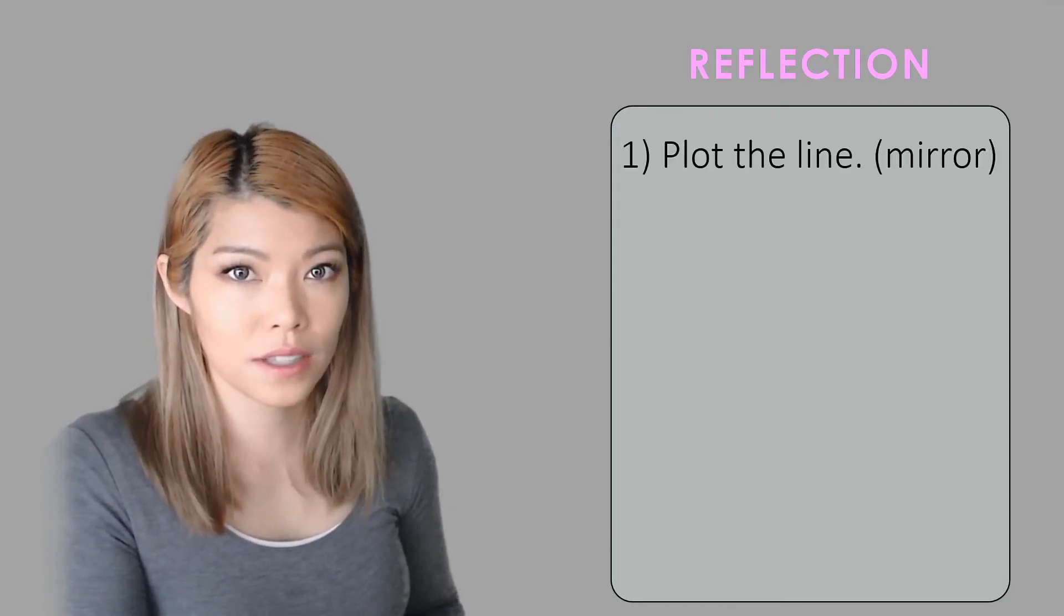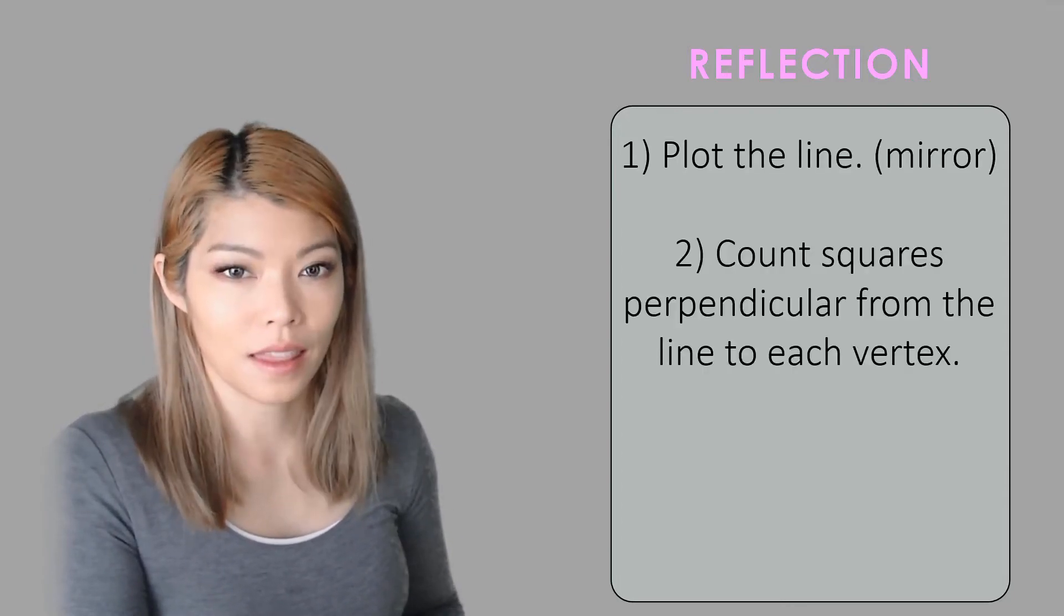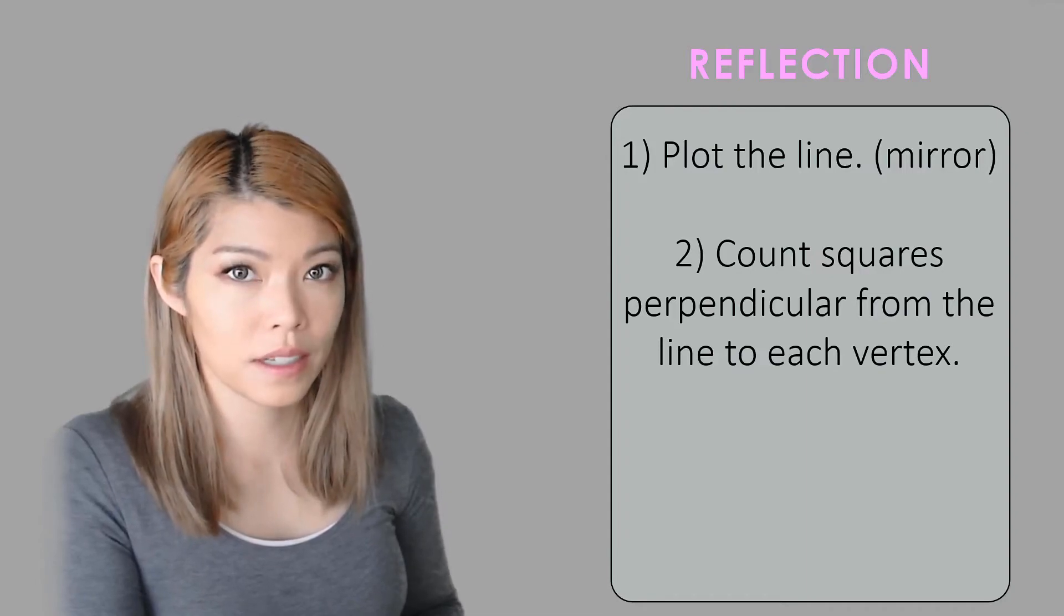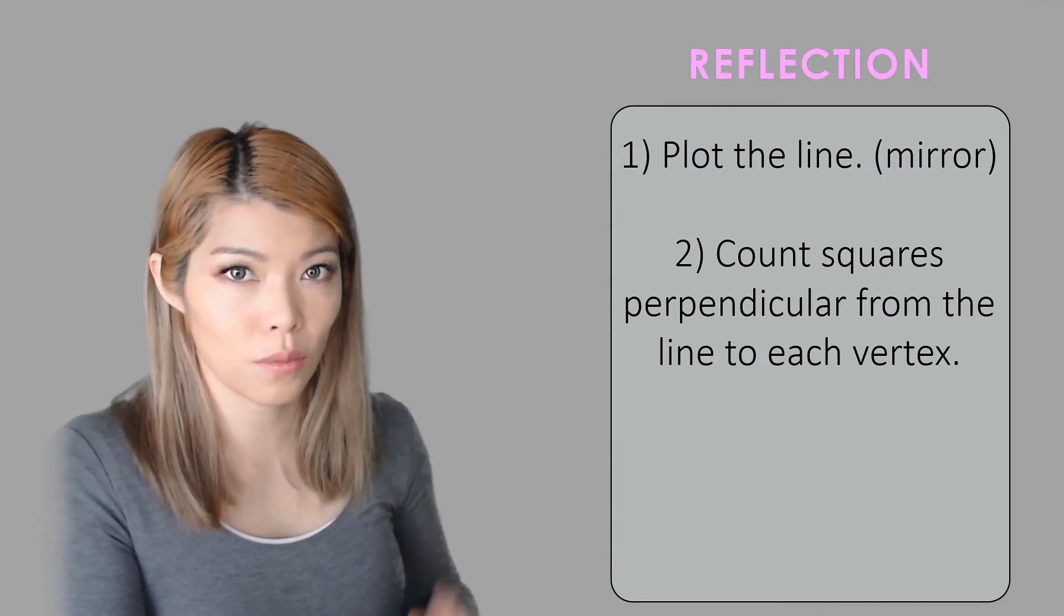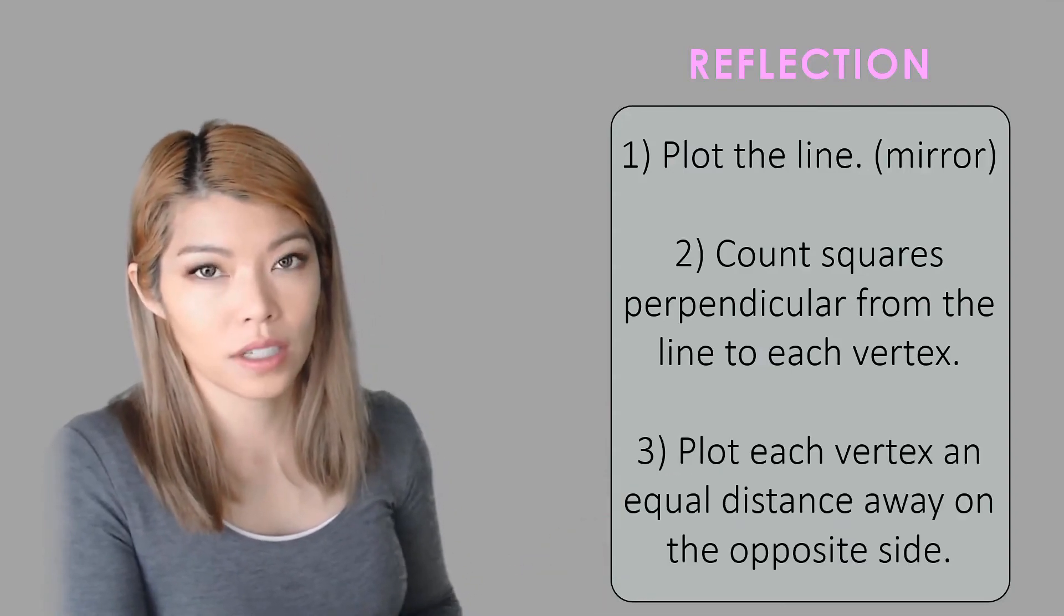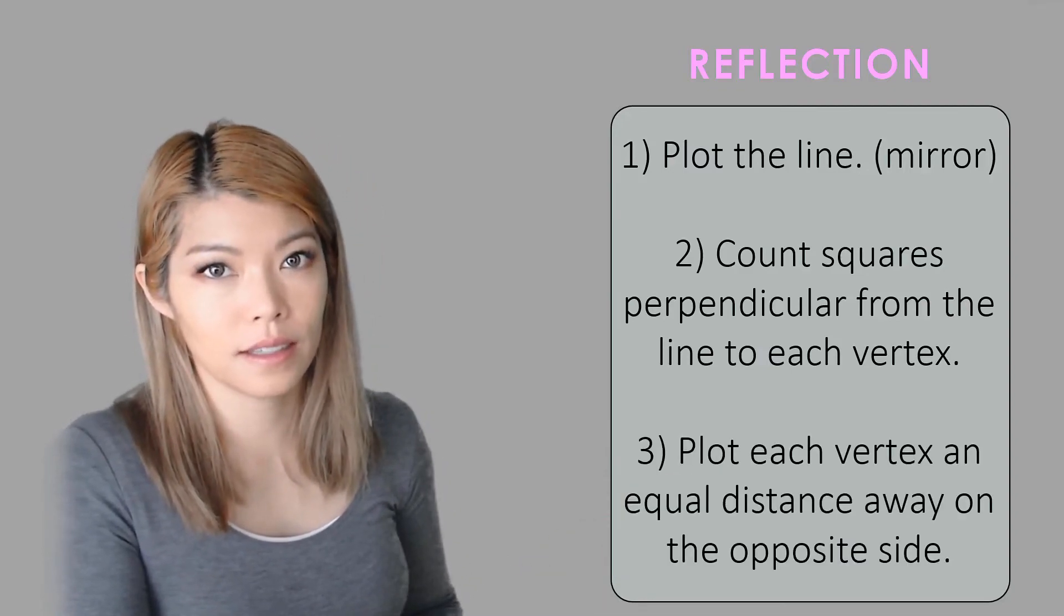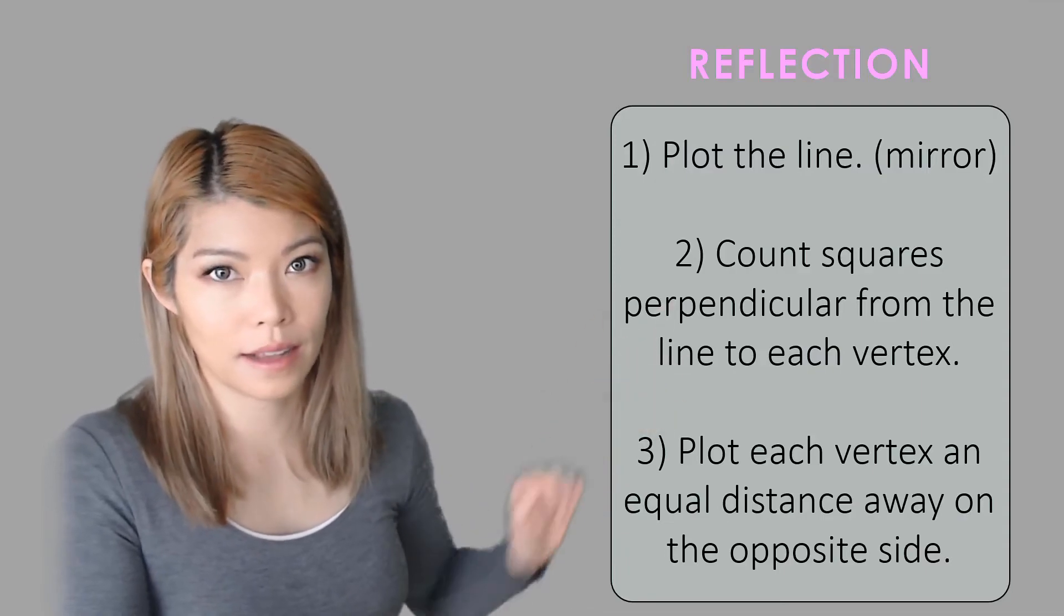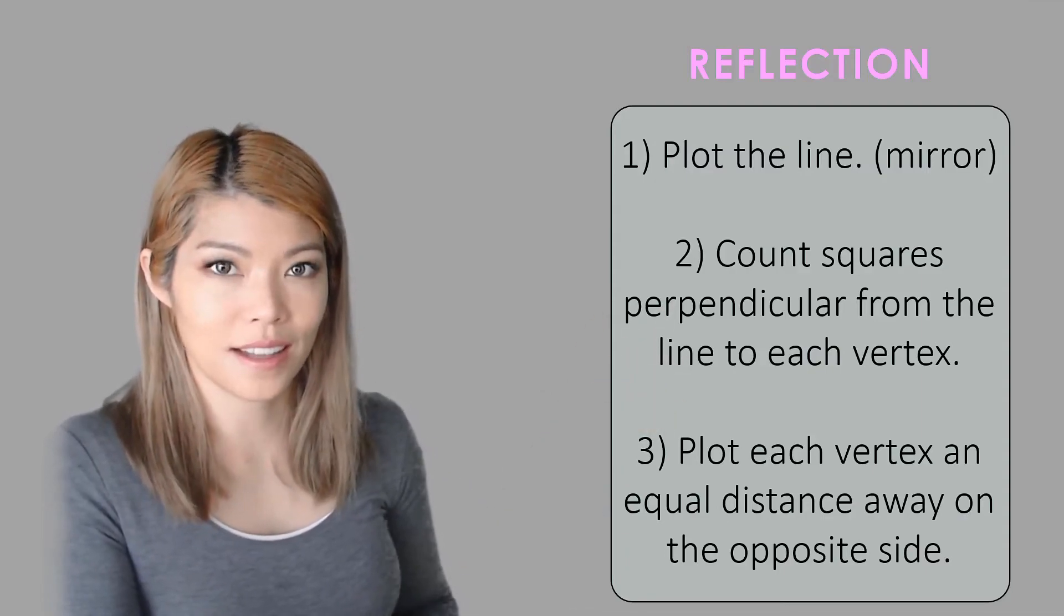So do you remember the steps? So in order to draw a reflection first you must draw the mirror and then count the squares perpendicular to your vertex, so from one corner to the mirror to the other side, and then plot each of the new vertices, so the new dots or the x's that we did, and then join the lines together.